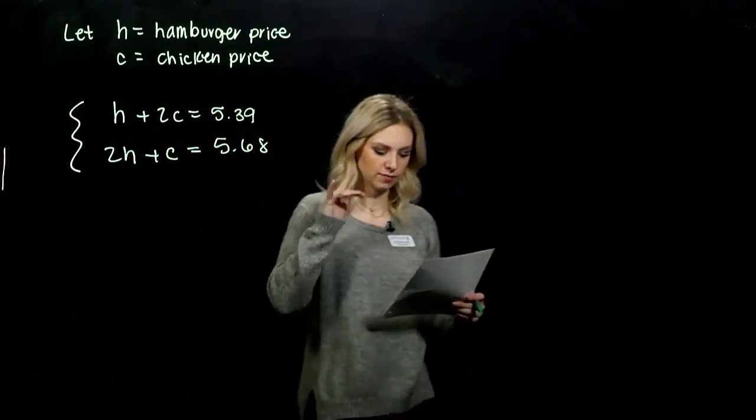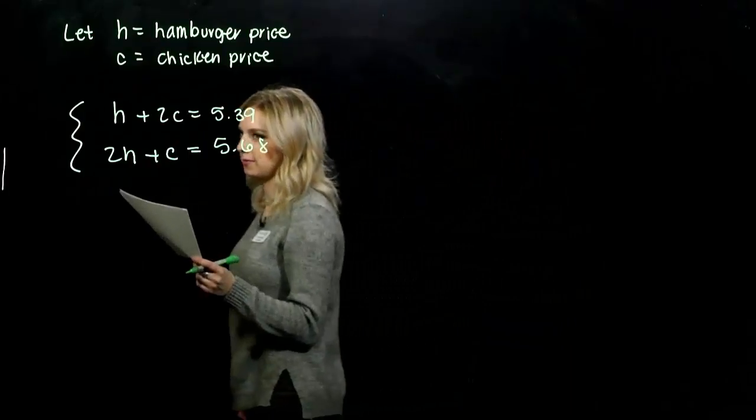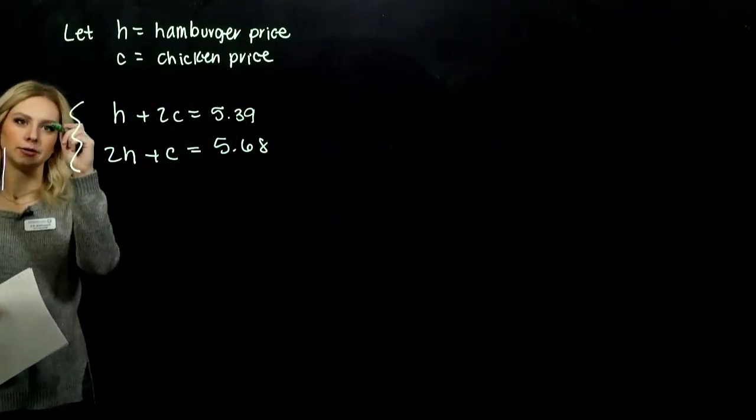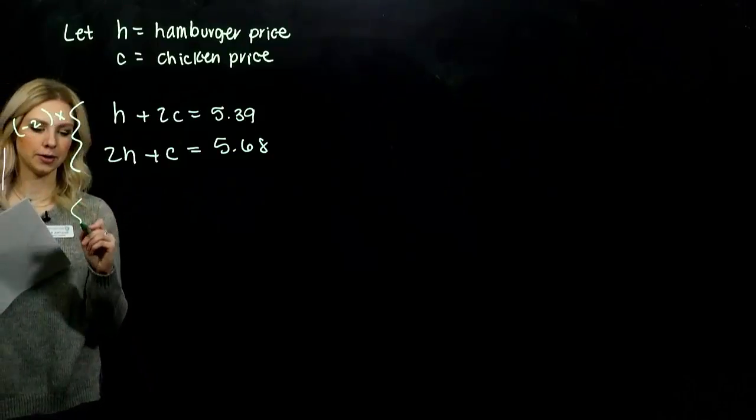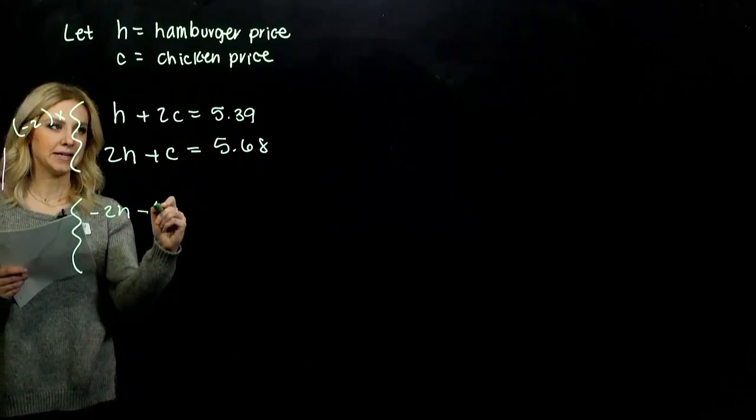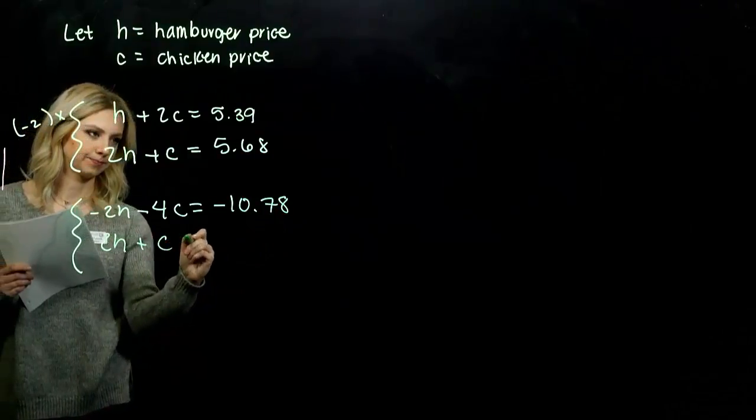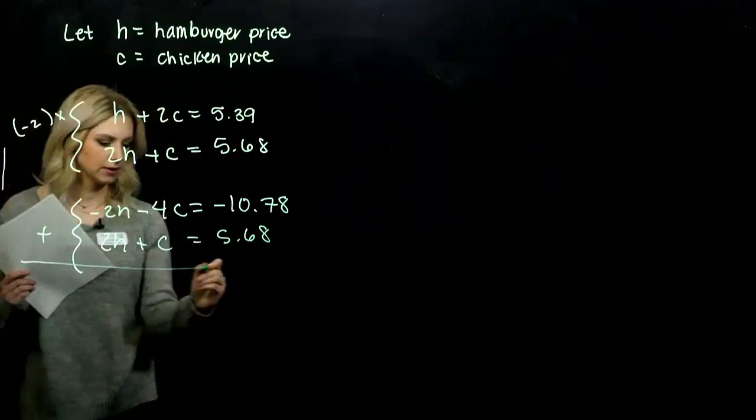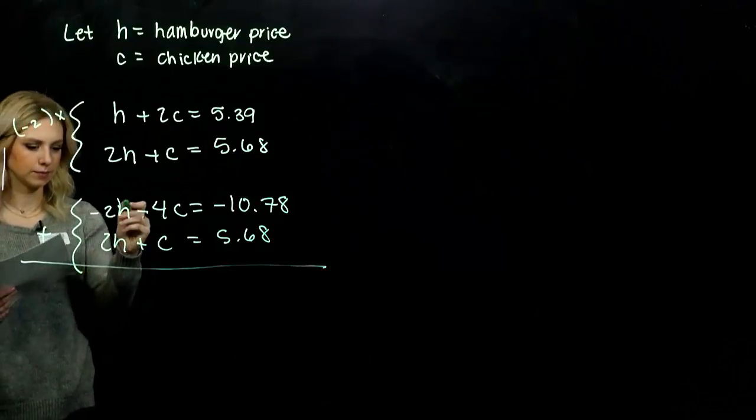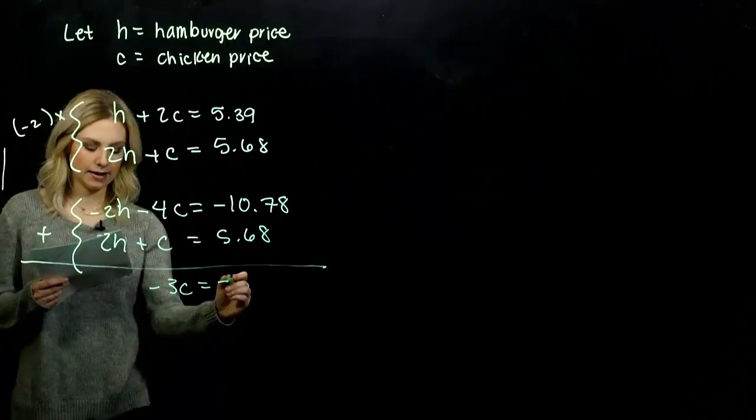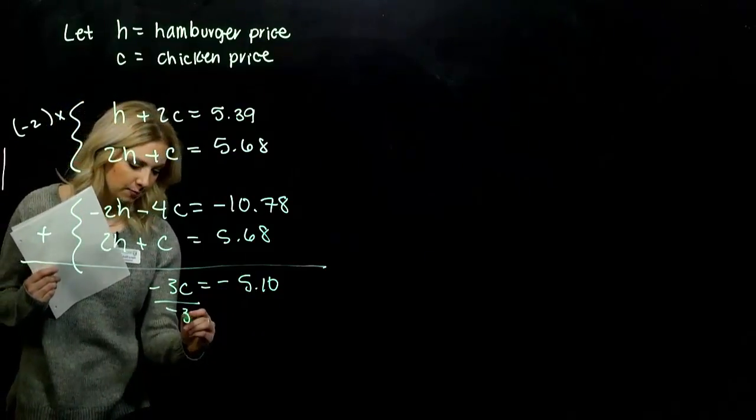Now we have a system, two variables that are involved, and we can solve however we want. However you solve is going to be great. I'm going to use the elimination method. And I'm going to get rid of H, the hamburgers. So I'm going to multiply everything up here by -2. When I do that, the equivalent system is -2H - 4C = -10.78. And I didn't change this one, 2H + C = 5.68. So when we add those together now, those are gone. We're left with -3C, and I've got -5.10. So negative divided by negative is going to give me a positive, which is good. So chicken is $1.70.